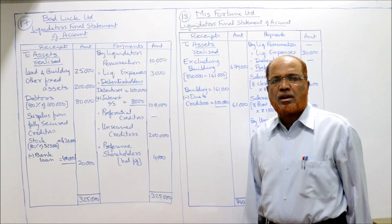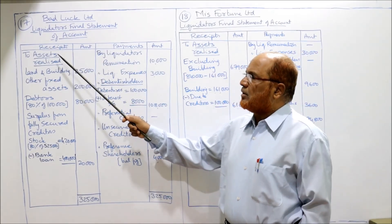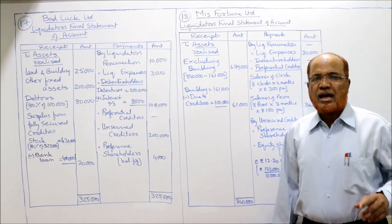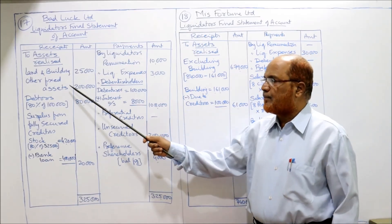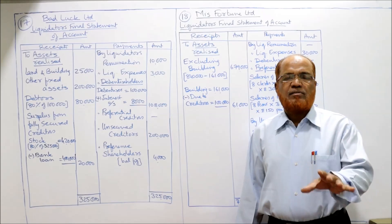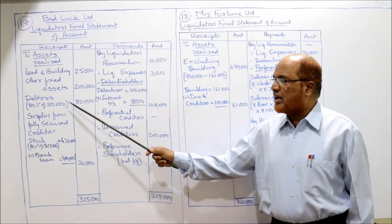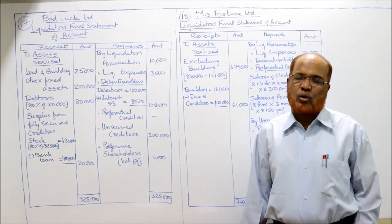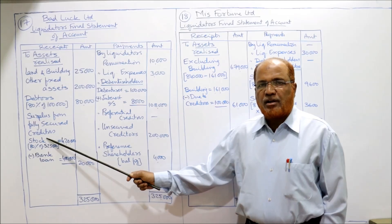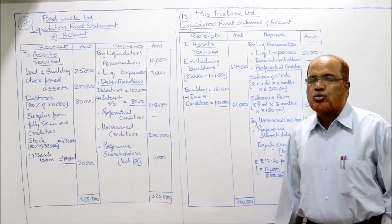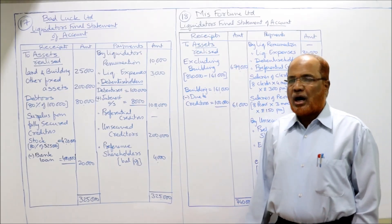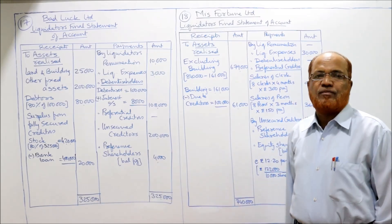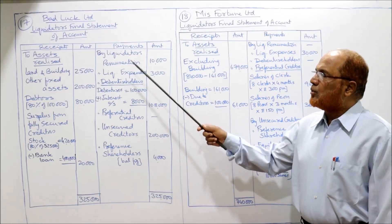This problem is very simple — no working notes required. In the liquidator's final statement of account, receipts: land and building 25,000, other fixed assets 2 lakh (same book values), debtors 80,000 (80% of 1 lakh, current asset), stock surplus from fully secured creditors — 80% of 5,25,000 = 4,20,000, bank loan 4 lakh, surplus 20,000. Total receipts = 3,25,000.